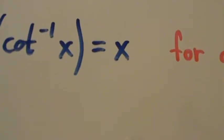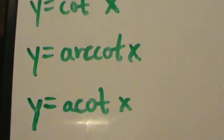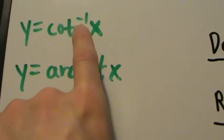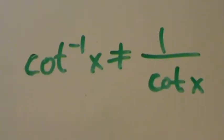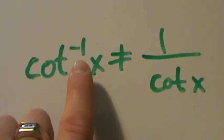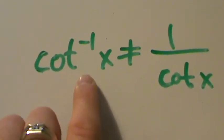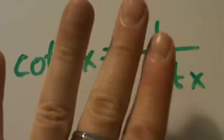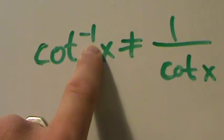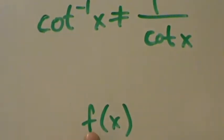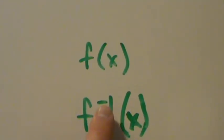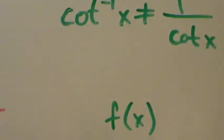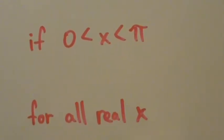That's pretty much it for the inverse cotangent. A quick note about notation: we have these three different ways of writing it — cotangent inverse of x, arc cot of x, or acot of x. Be very careful with the negative 1 in the exponent, because just like with other inverse trig functions, it does not mean what it usually means for algebraic expressions. Cotangent inverse of x is not the same as 1 over cotangent of x. One over cotangent of x is actually tangent of x, and tangent of x is not the same as inverse cotangent. The notation comes from the general convention that for a function f of x, its inverse is denoted f inverse of x. So that's it for the inverse cotangent function — more inverse trig coming up in the next few videos.